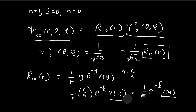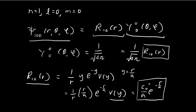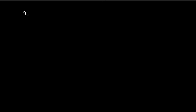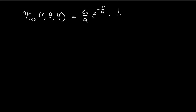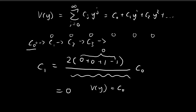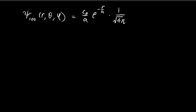Since v(y) is just the single constant c₀, going back to our expression, R₁₀ simplifies and we're almost done with the derivation. Our function ψ is going to be equal to (c₀/a) × e^(−r/a) × (1/√(4π)). Now we need to determine what c₀ actually is.